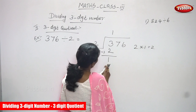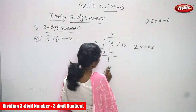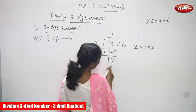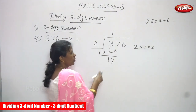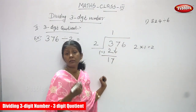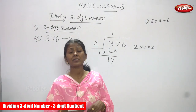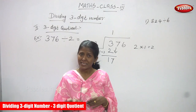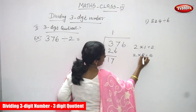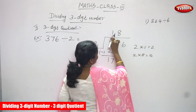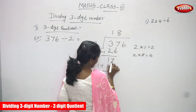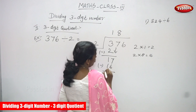So 3 minus 2, you can get 1. Now again you have to compare 1 and 2. So 1 is less than 2, it is not enough to divide. So you have to bring down the tens place value 7. Now it is 17. 17 is greater than 2, so it is enough to divide. You must use the 2 table: 2 eights are 16. So stop at 16 and write 8 in the tens place. So 17 minus 16: 7 minus 6 is 1, 1 minus 1 is 0.